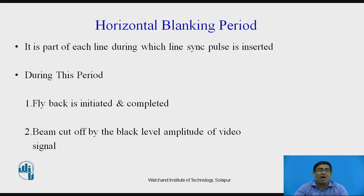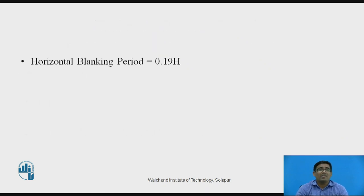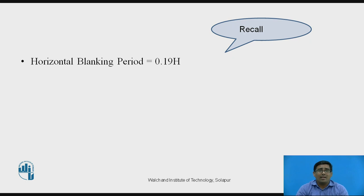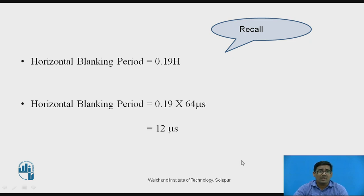The horizontal blanking period is the part of each line during which the line synchronization pulse is inserted. During this period there are two conditions: first, flyback is initiated and completed; and second, the beam is cut off by the black level amplitude of the video signal. The horizontal blanking period equals 0.19 × H. Substituting H = 64 microseconds gives 0.19 × 64 = 12 microseconds. Therefore, the horizontal blanking period requirement is 12 microseconds.